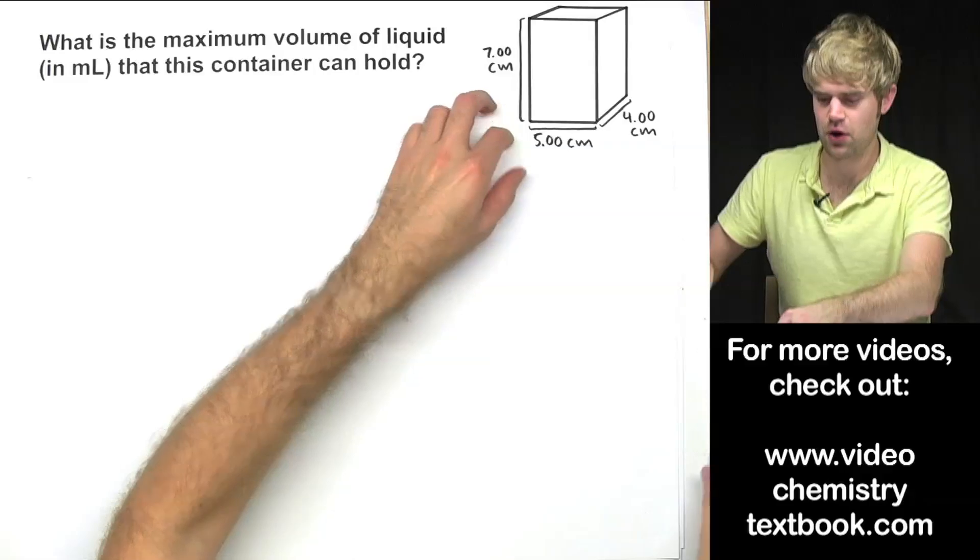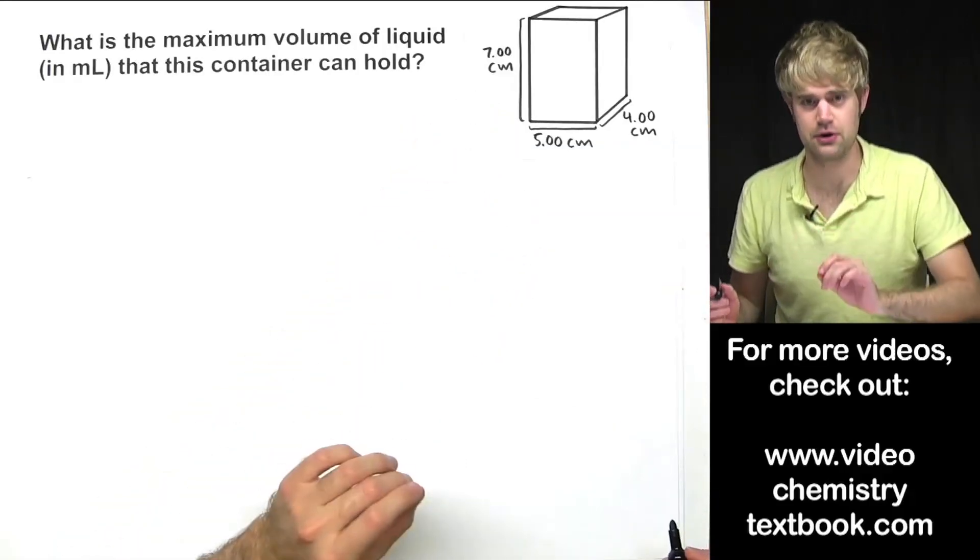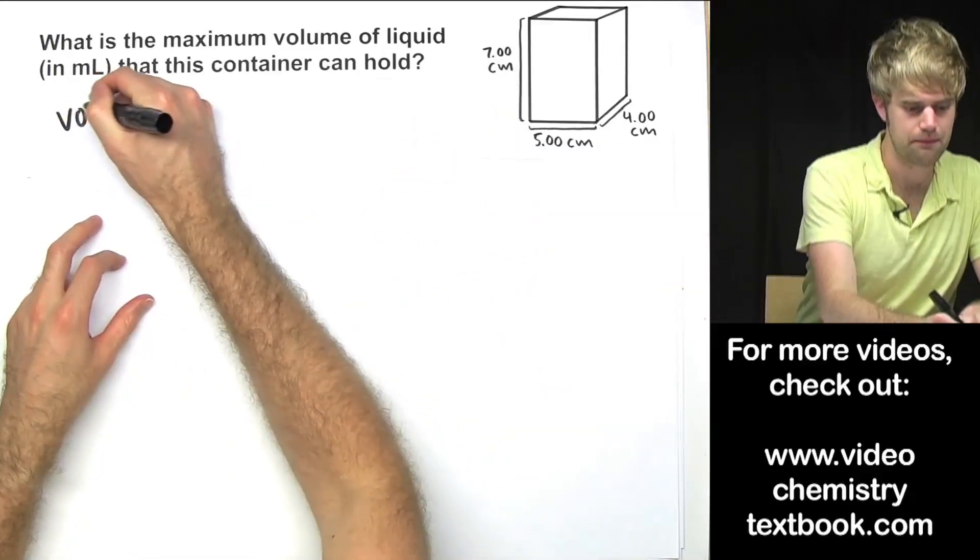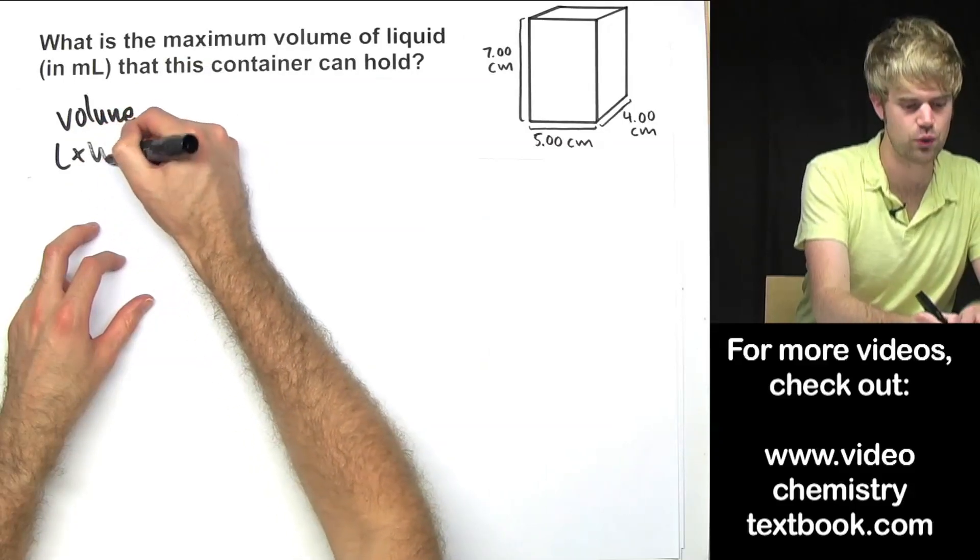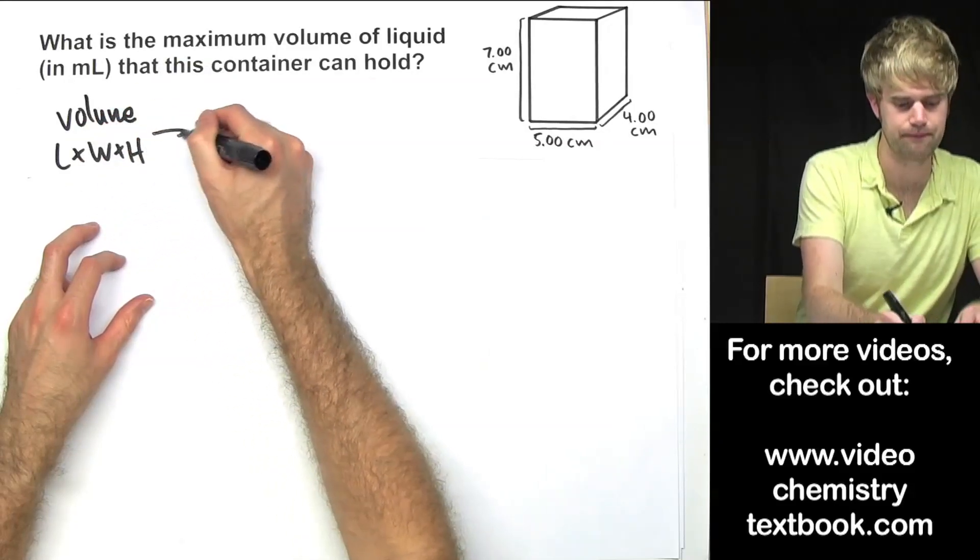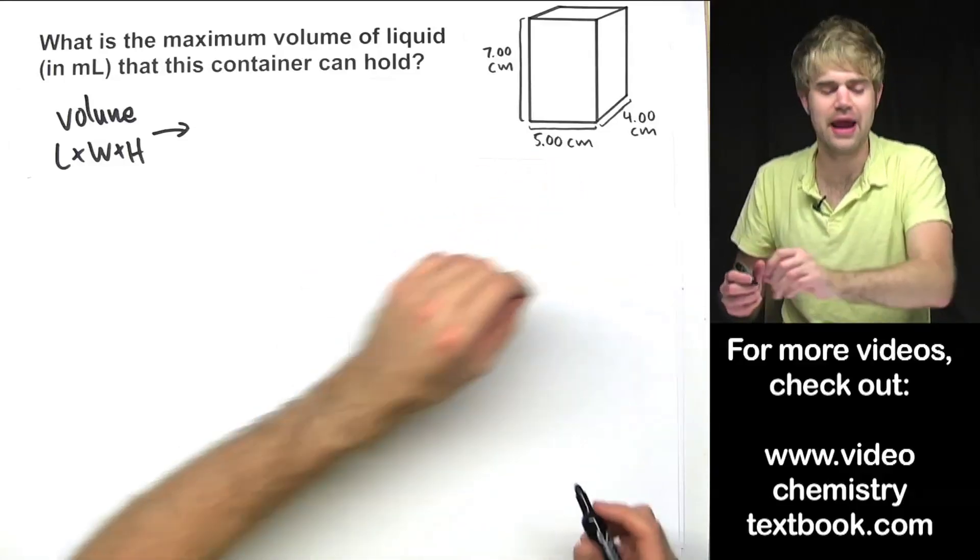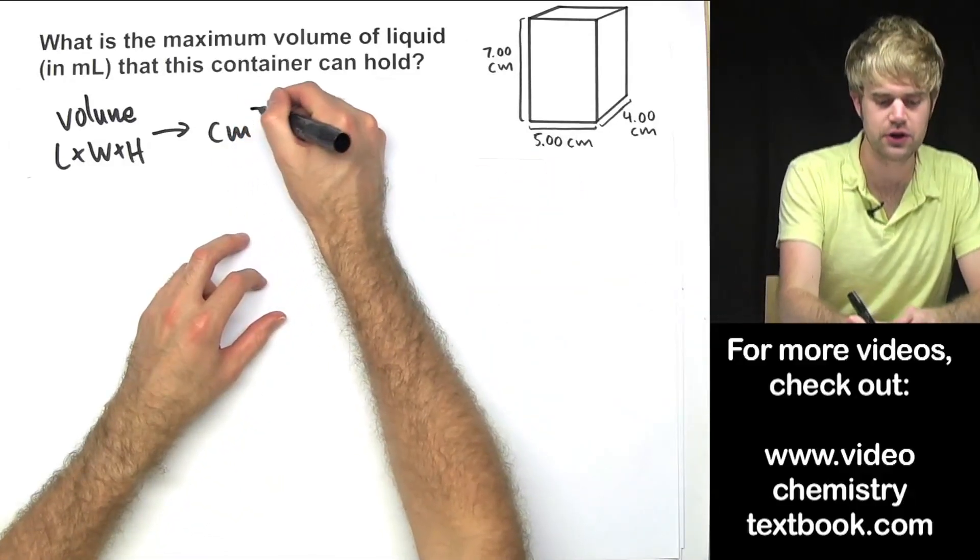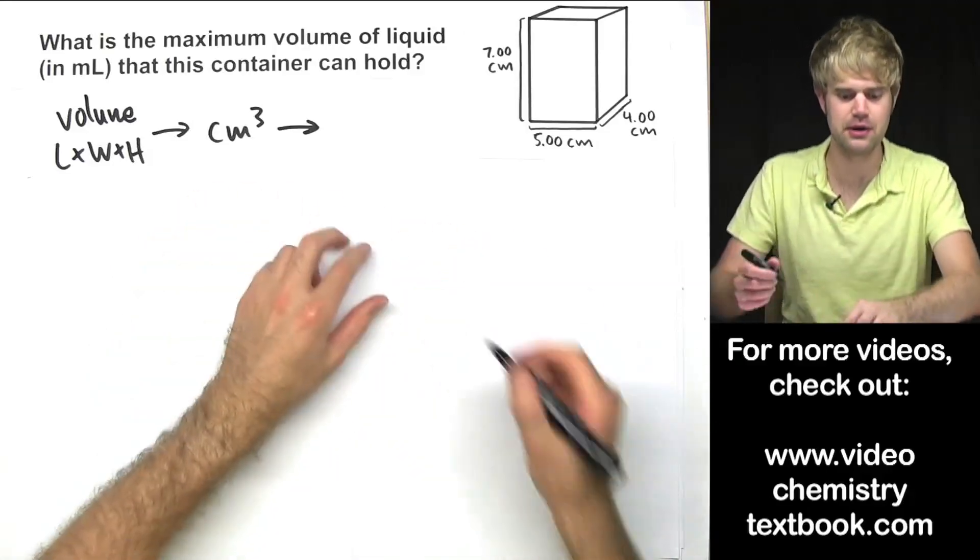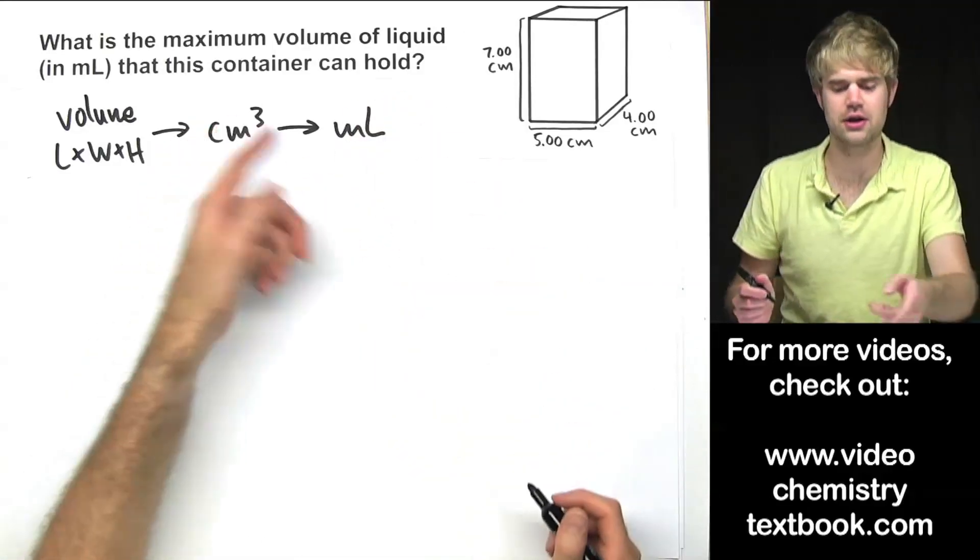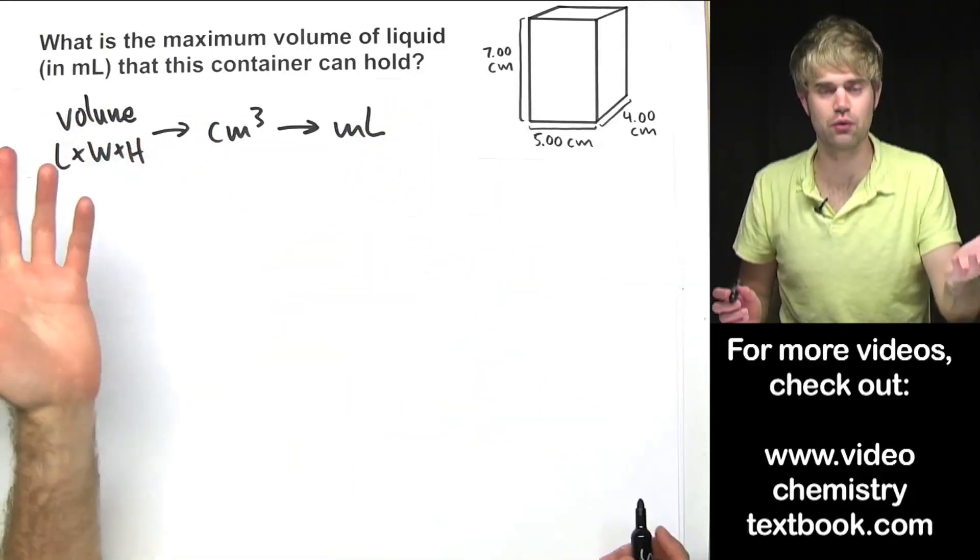So what are the steps I'm going to take for solving this problem? The lengths of all the sides are given to me in centimeters. So I'm going to start by calculating the volume by doing length times width times height. When I do that, I'm going to end up with units of cubic centimeters. And since we said that cubic centimeters and milliliters are the same, once I get cubic centimeters I can just easily get right into milliliters.